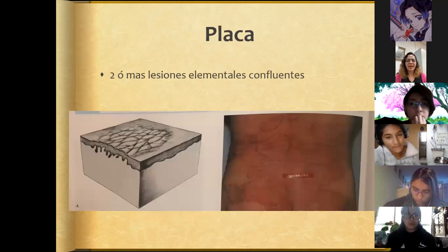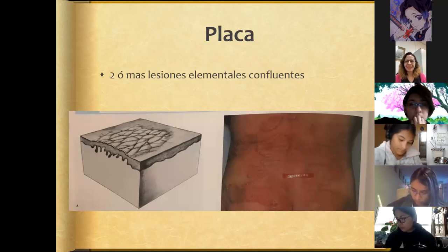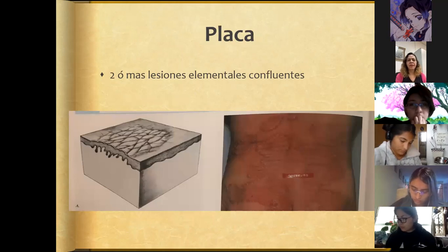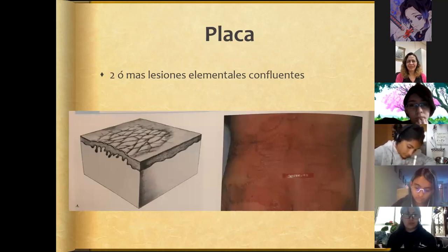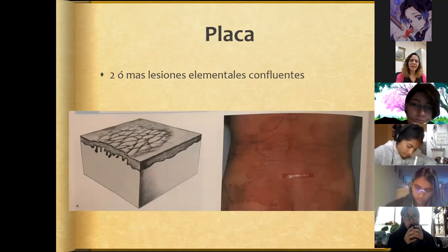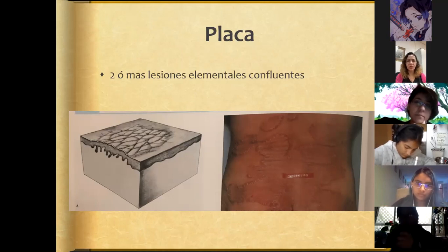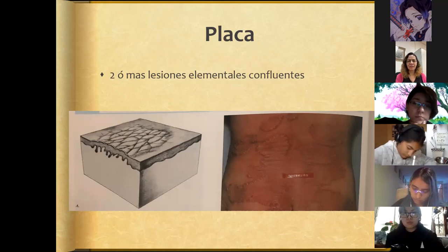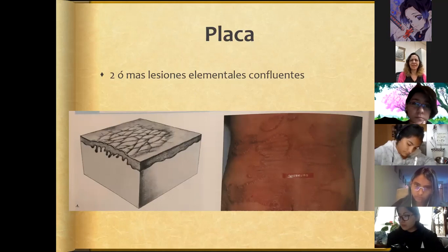A plaque refers to two or more confluent elementary lesions. The most typical example is psoriasis — erythematous-squamous plaques with erythema and desquamation. Histologically, it involves the epidermis with increased stratum corneum and certain dermal involvement with abundant inflammatory infiltrate, which is why they have texture and are elevated. Plaque means the confluence of two or more elementary lesions.